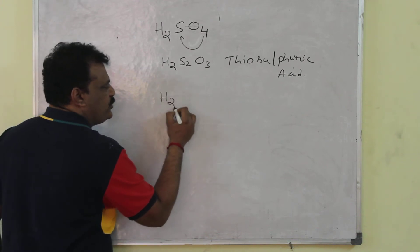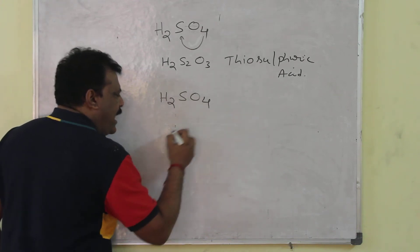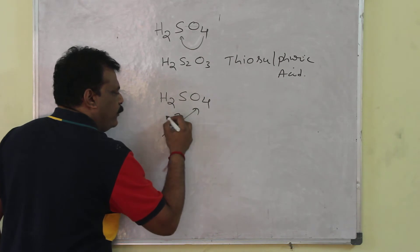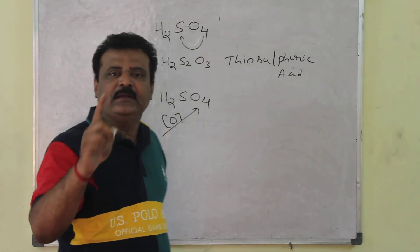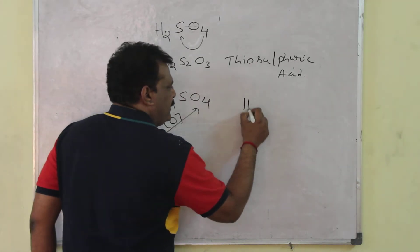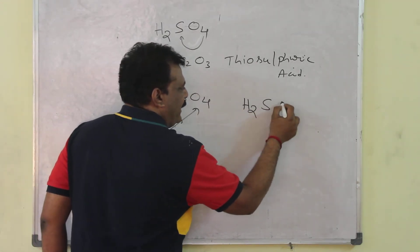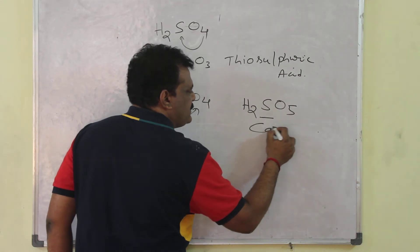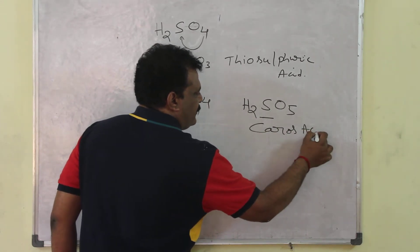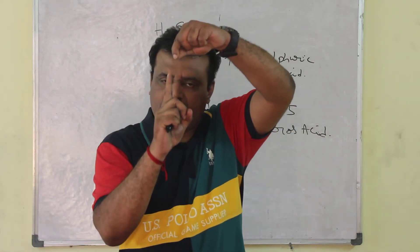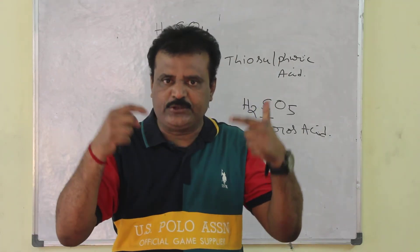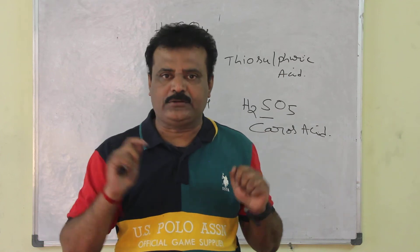Next, sulfuric acid H2SO4. Add one oxygen atom to sulfuric acid. That's H2SO5. This is Caro's acid. Second one: take sulfuric acid, add one oxygen atom, it becomes H2SO5. That is Caro's acid.